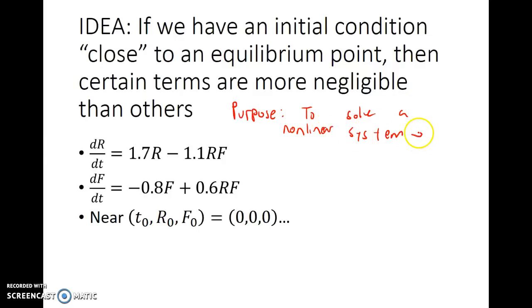So the purpose is, and I'll write this as a purpose to solve a non-linear system. Well, how do we do that? Well, the idea is that we are going to linearize the system. In other words, we're going to take a non-linear system and make it linear. The idea is this. If we have an initial condition close to an equilibrium point, then certain terms are more negligible than others. For example, we know that one of the equilibrium points of this predator-prey model is that if there are zero rabbits, zero foxes, then you have 1.7 times zero minus 1.1 times zero is zero. Negative 0.8 times zero plus 0.6 times zero is zero. So 0, 0, 0 times zero, no rabbits, no foxes, means you're not going to have a rate of change in that population. You'll have a zero rate of change.